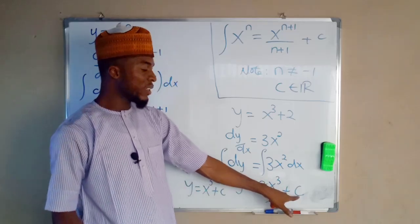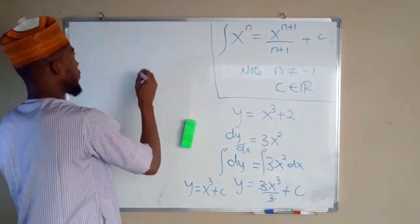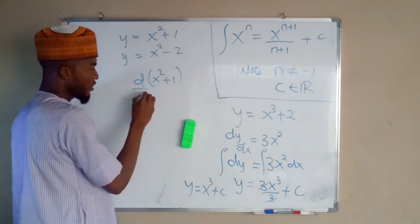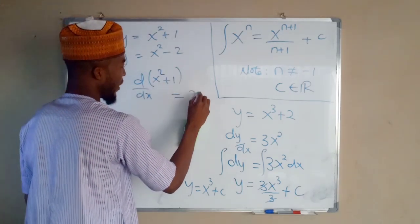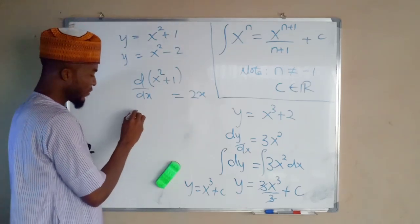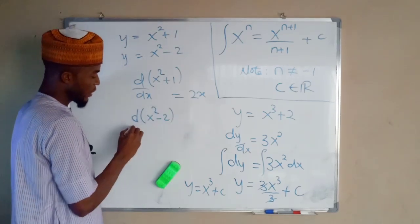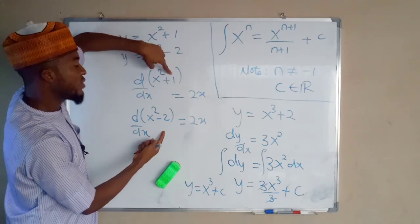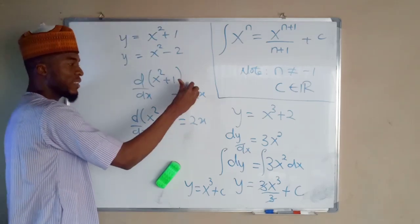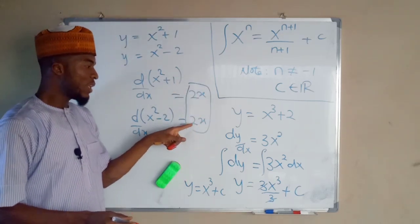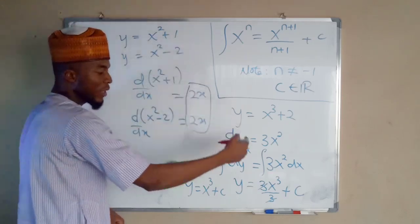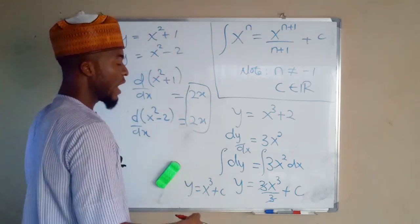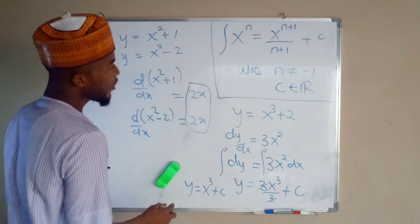Therefore, by integrating that function the end product is going to be the function plus constant C. For example, suppose y equals x squared plus 1: if you differentiate it with respect to x you get 2x. Likewise, if you differentiate x squared minus 2 with respect to x you still get 2x. Their constants are different — here positive 1 and here negative 2 — but their derivatives are the same. If you integrate 2x you obtain x squared plus C, where C represents these constants, which are subsets of real numbers. This is all about the introduction to integration.